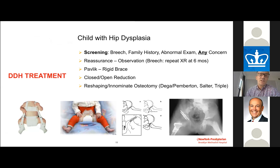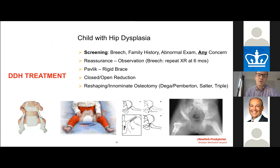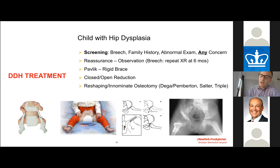When talking about treatment, screening is the absolute most important thing — the earlier you detect hip dysplasia, the less invasive the treatment will be. Any child born breech, any family history of hip dysplasia, or any abnormal exam should warrant further investigation. In very mild cases, reassurance may be sufficient. In breech patients, I will routinely repeat the x-ray at six months even if the initial examination is normal.